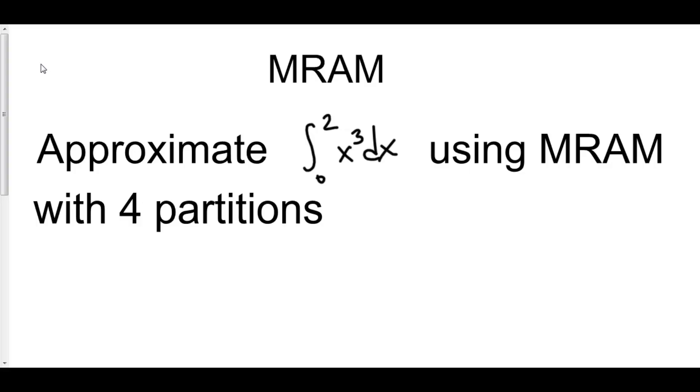Let's use MRAM to approximate the integral from 0 to 2 of x cubed dx, and we're going to use 4 partitions once again.